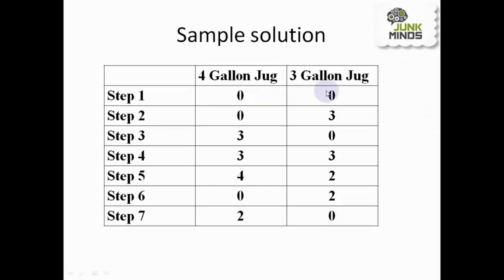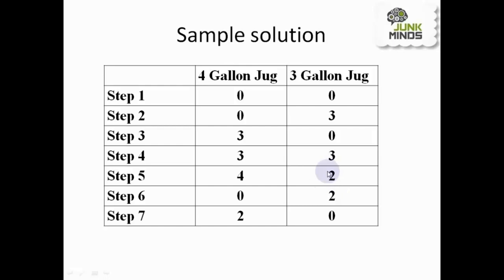Initially both jugs are empty. Fill the three gallon jug, then pour all the water from the three gallon jug into the four gallon jug. Fill the three gallon jug again, then pour water from the three gallon jug into the four gallon jug until it is full — that leaves two gallons in the three gallon jug. Empty the four gallon jug and pour those two gallons into it. That is the solution.